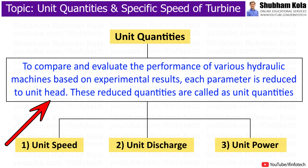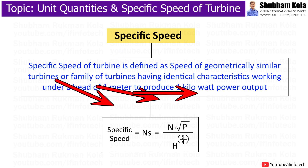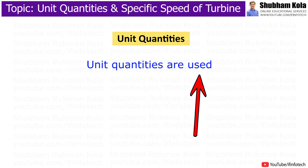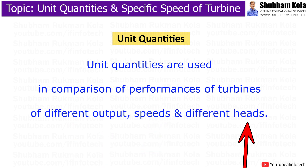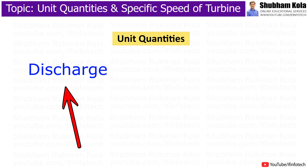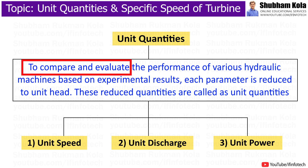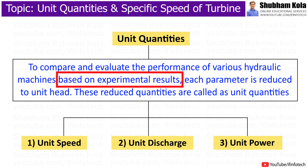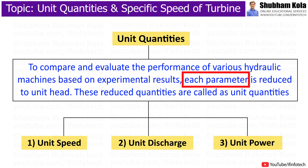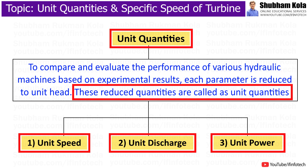In this video, we will discuss unit quantities and specific speed of turbine. Unit quantities are used in comparison of performance of turbines of different output speeds and different heads. The discharge, speed and power of hydraulic machines are all functions of head. Therefore, to compare and evaluate the performance of various hydraulic machines based on experimental results, each parameter is reduced to unit head. These reduced quantities are called unit quantities.